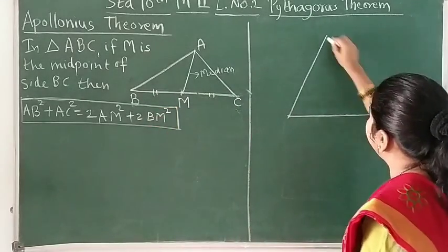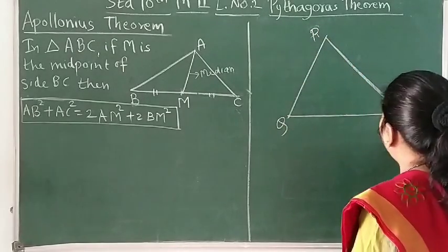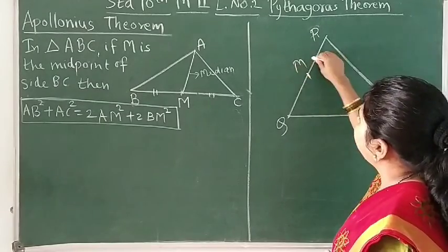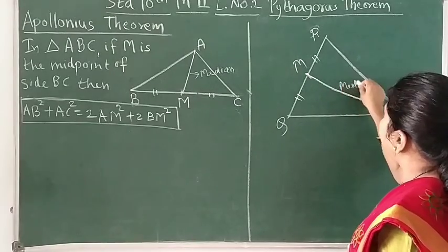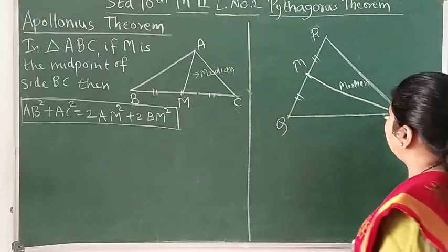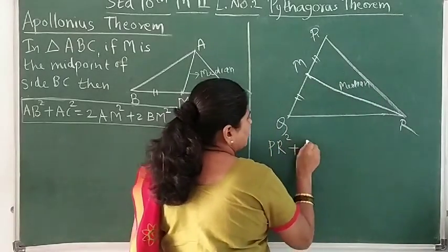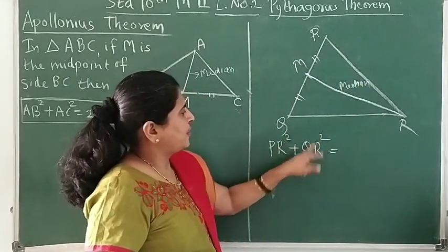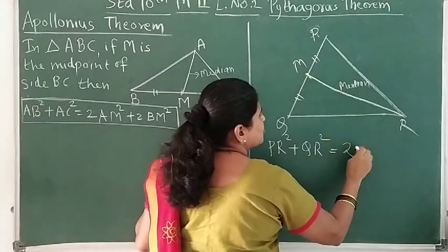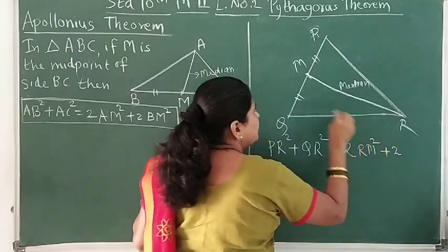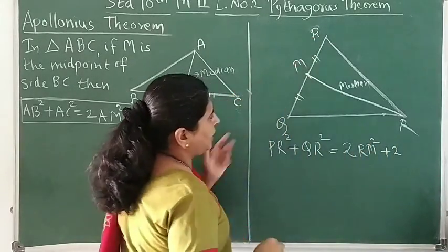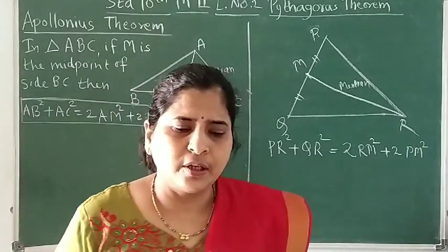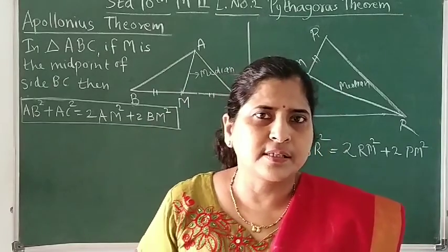If it is another triangle, say PQR, and if we take the midpoint of any side, say PQ, call that point M, which is the midpoint, then RM will be your median. The two remaining sides are PR and QR. So it is PR square plus QR square equal to 2 times RM square plus 2 times PM square. Either PM or MQ — any half. Like that we can write for any such triangle. So this is your Apollonius theorem.